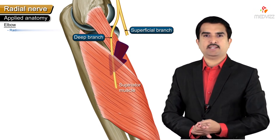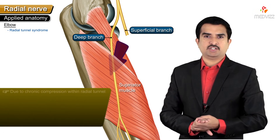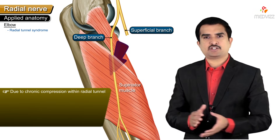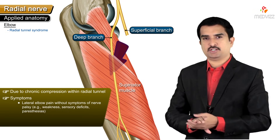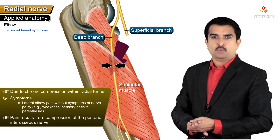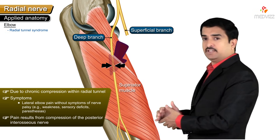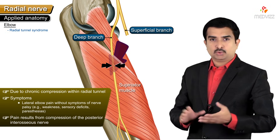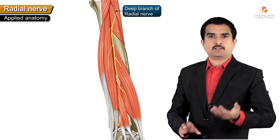Injury to the radial nerve at the elbow is called radial tunnel syndrome, though it has a controversial diagnosis. It is caused by chronic compression within the radial tunnel and is characterized by lateral elbow pain without nerve palsy symptoms such as weakness, sensory deficits, or paresthesias. The pain results from compression of the posterior interosseous nerve within the radial tunnel - an anatomical space on the lateral aspect of the elbow extending from the radial head to the distal margin of the supinator muscle.